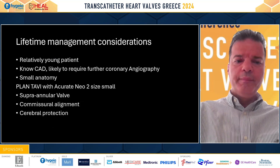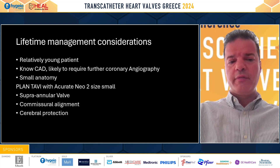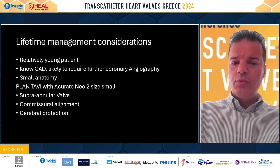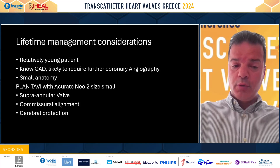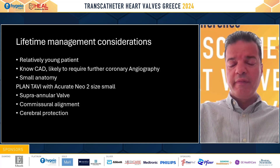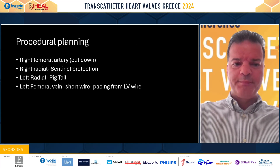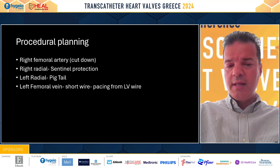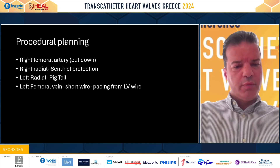Clearly it's a relatively young patient below 80, there is known coronary disease so she's likely to require further angiography, and the anatomy is small — so I have to consider all this. Our plan was to implant an Accurate Neo2 size small valve, because it's a supraannular valve with favorable hemodynamics. There is the potential of easy commissural alignment, which helps both with hemodynamics and coronary axis access. We plan to use a cerebral protection device. The primary access would be from the right femoral artery with a cut-down, which has been our routine for the last three and a half years with great success.